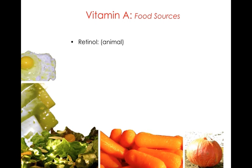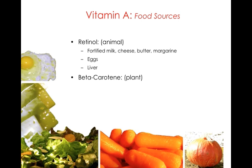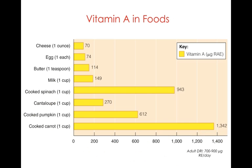Food sources: animal sources include eggs, cheese, dairy products, and liver. Plant forms include the dark leafy vegetables and the deep orange fruits and vegetables. As shown in the comparison, you get a whole lot of vitamin A in the form of beta-carotene in carrots and cooked spinach.